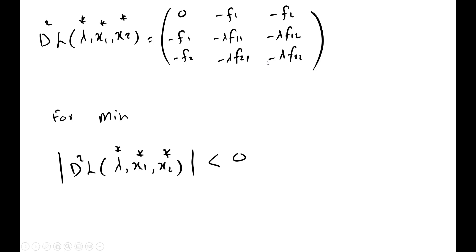For more factor inputs, all the minors — the principal minor and the leading minors — should be negative for minimization. However, for maximization of the function, the first principal minor should be positive, the second should be negative, the third should again be positive, and so forth. So for maximization, all minors should follow alternating signs starting from positive, while for minimization all principal and leading minors should be negative.